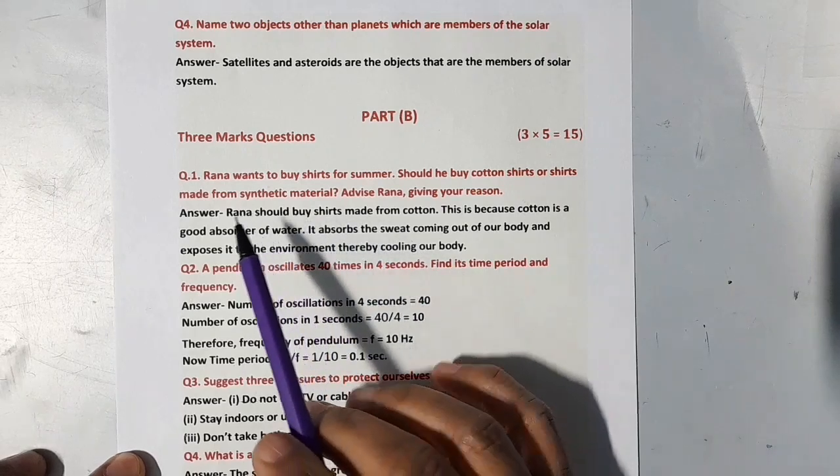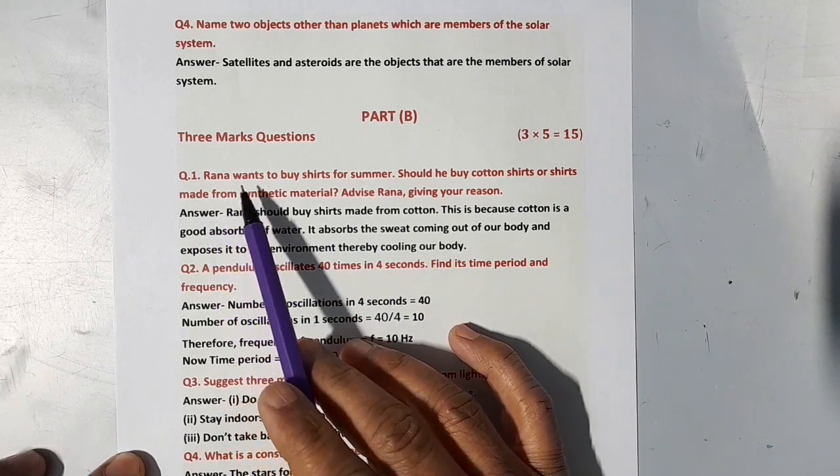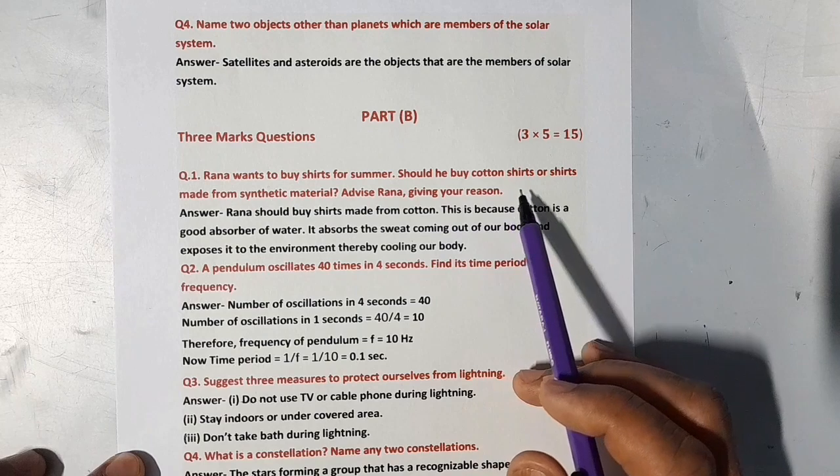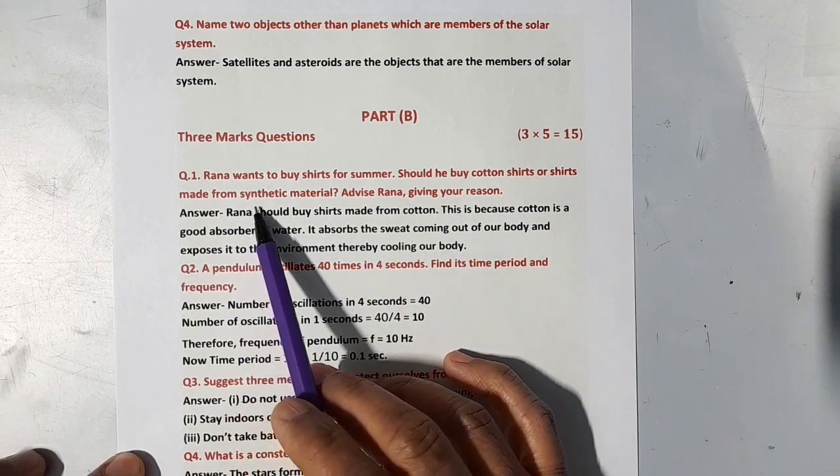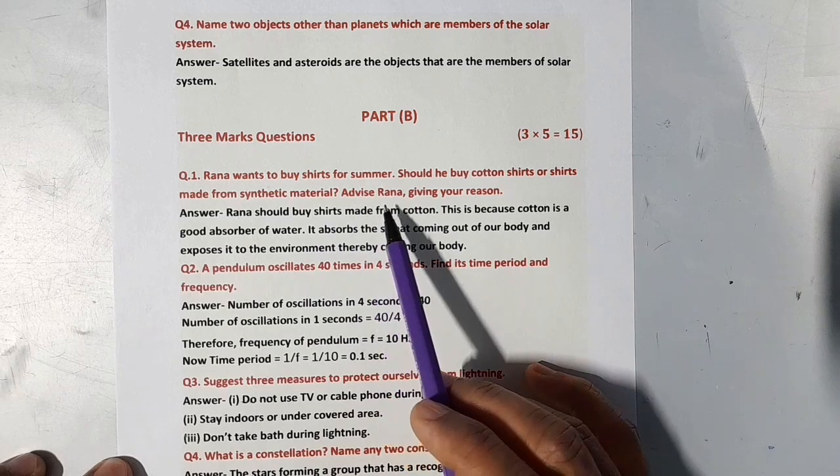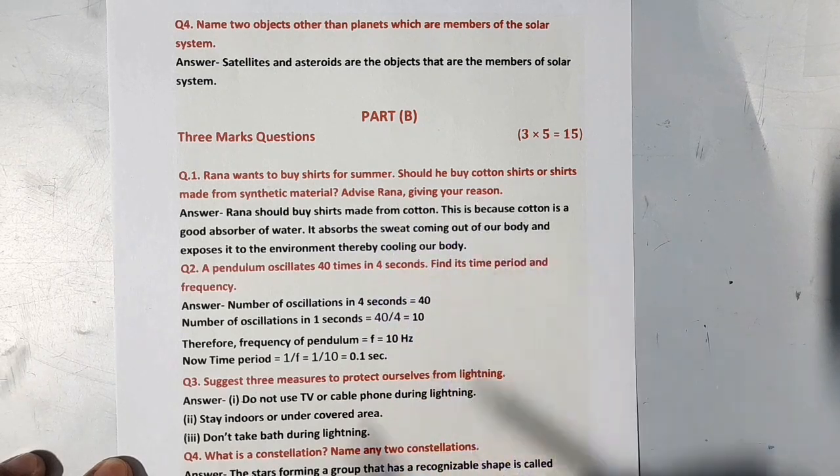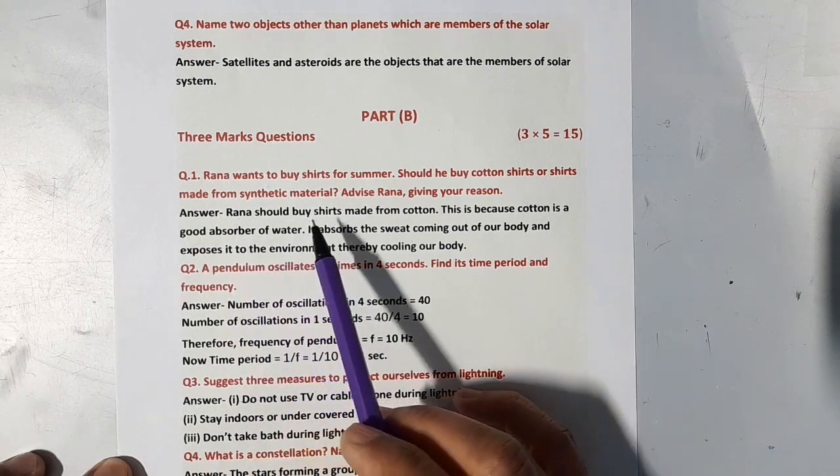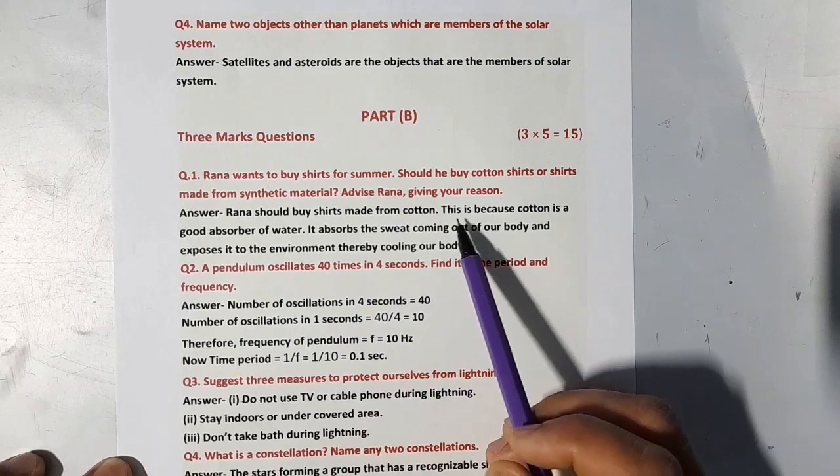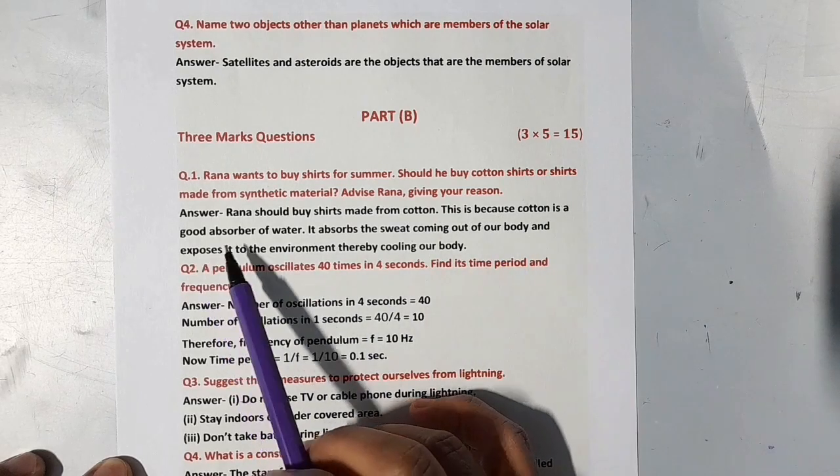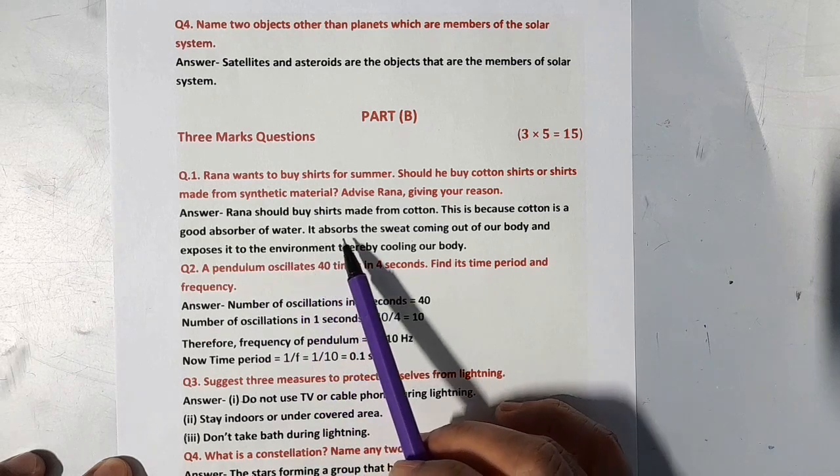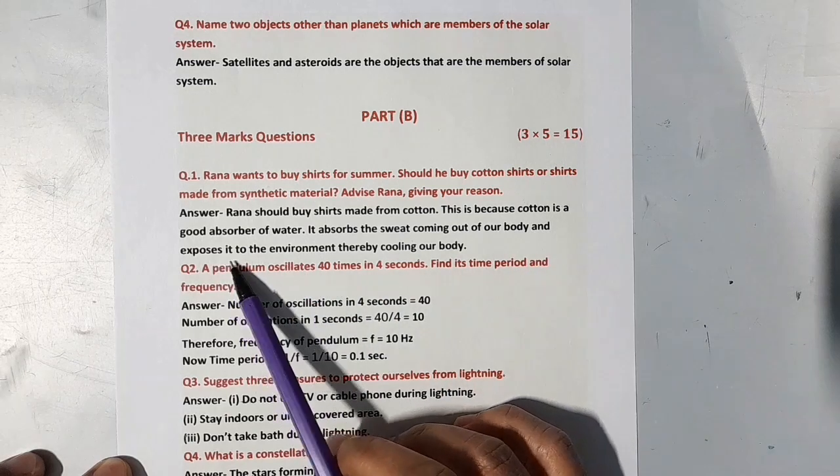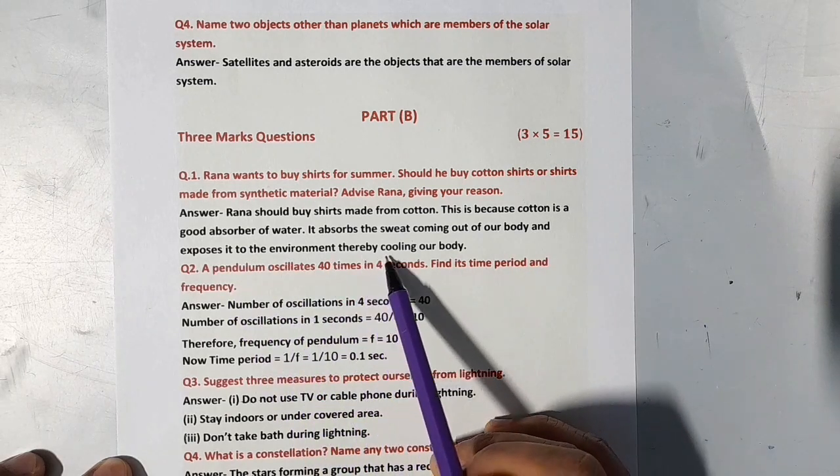Let's start our first question. Rana wants to buy shirts for summer. Should he buy cotton shirts or shirts made from synthetic material? Advise Rana giving your reason. Answer: Rana should buy shirts made from cotton. This is because cotton is a good absorber of water. It absorbs the sweat coming out of our body and exposes it to the environment thereby cooling our body.